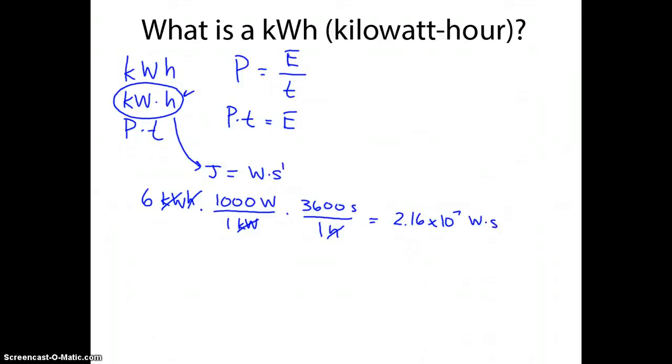And since we made this statement here, that one joule is a watt second, we can just say that this is 2.16 times 10 to the 7 joules. So if this makes more sense to you, then we can convert a kilowatt hour to a joule simply by going through the conversions and realizing that power is just energy per time. So therefore, power times time gives you an energy.